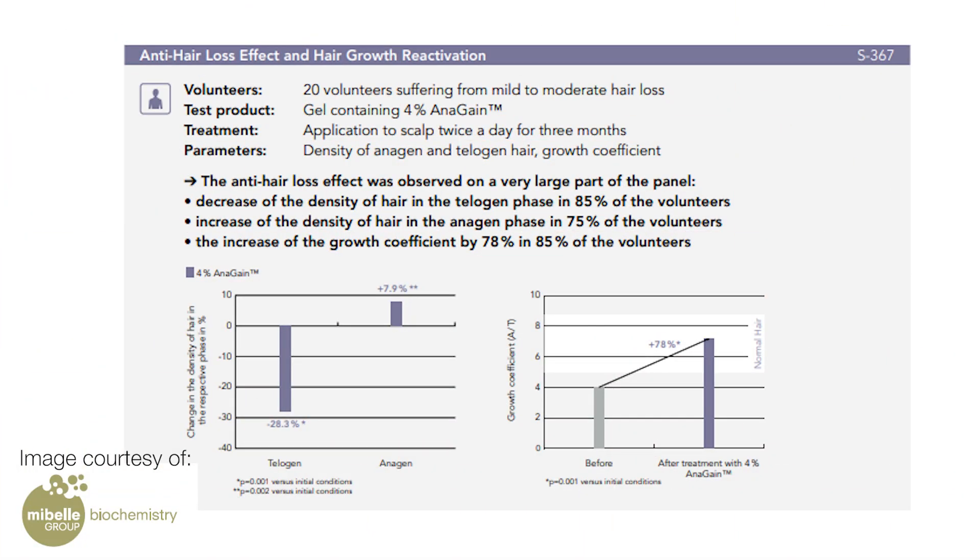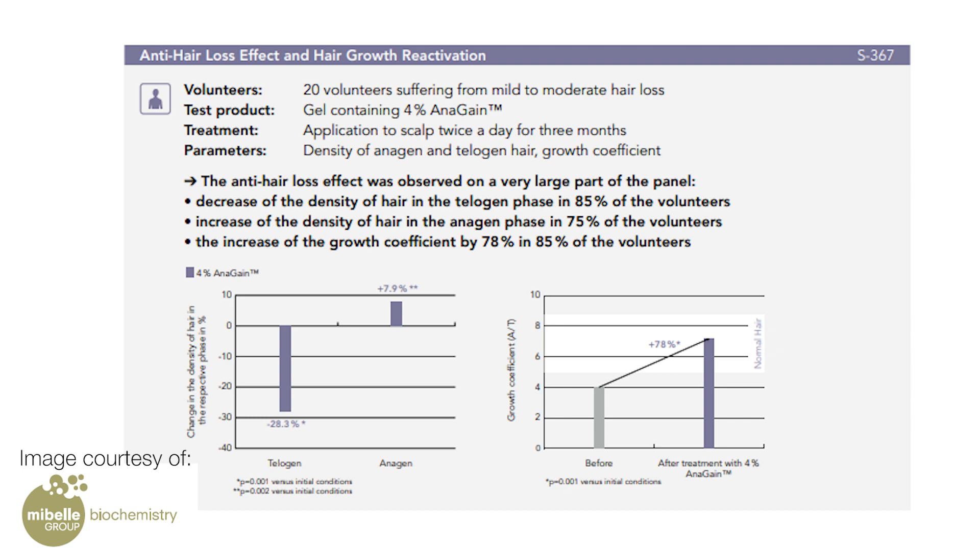So Anagane works by reducing hair loss by inducing dermal papilla cells to reactivate hair growth. In the graph here the anti-hair loss effect was observed on a very large part of the panel. There was a decrease of the density of hair in the telogen phase in 85% of the volunteers. And there was an increase of the density of hair in the anagen phase in 75% of the volunteers. So it helps to stimulate hair growth at the root, prolongs the life cycle of hair, fully restores the vitality of the hair and creates denser hair in just three months. This works for men and women who are suffering hair loss.